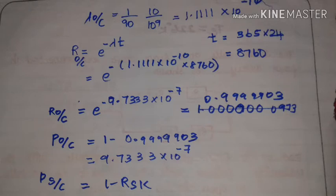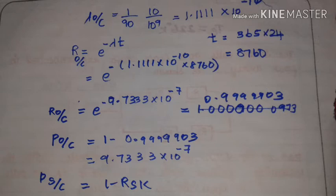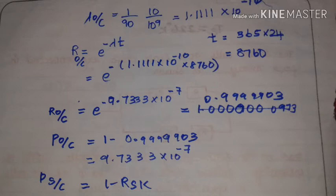ns is given by the surviving units. For open circuit, the failure rate lambda is 10 divided by 10 to the power 9 hours. The lambda value is 1.111 into 10 to the power minus 10 per hour. Converting one year: 365 into 24 hours equals 8760 hours. So R equals e to the power minus 9.733 into 10 to the power minus 7, which gives 0.999903.